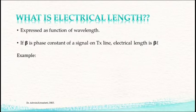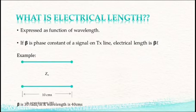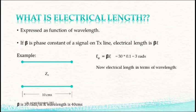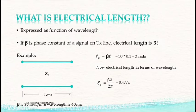Let us take an example to understand more about electrical length. If we have a transmission line of 10 centimeters long at an operating frequency, the phase constant is 30 radians per meter and the wavelength is 40 centimeters. The electrical length of the transmission line is calculated by beta·L, which comes to around 3 radians. In terms of wavelength, the electrical length is beta·lambda / 2π, which is 0.48 lambda. That's how we compute the electrical length, and we understand that antennas are also a kind of transmission lines.